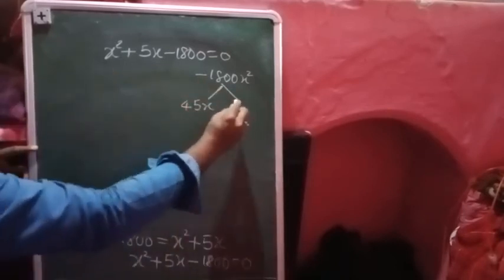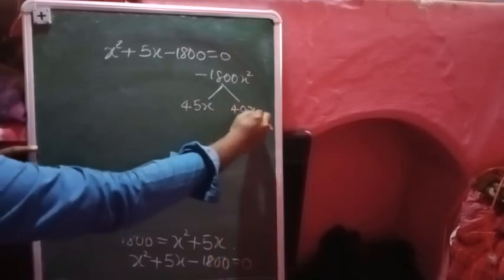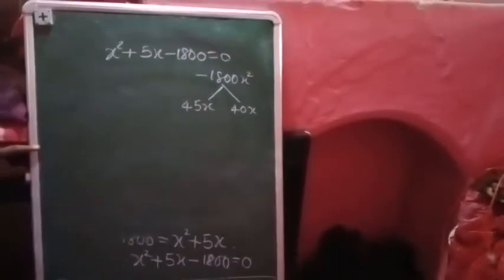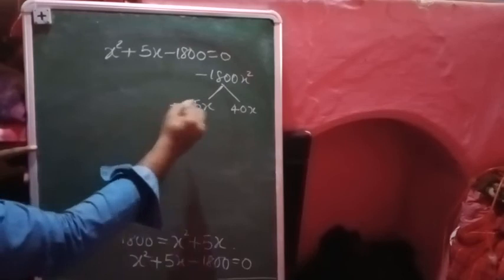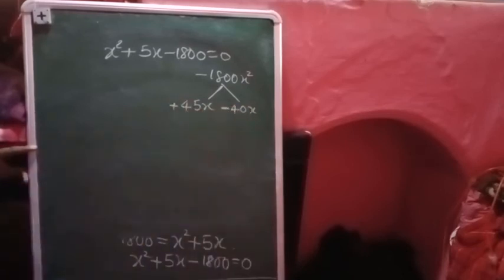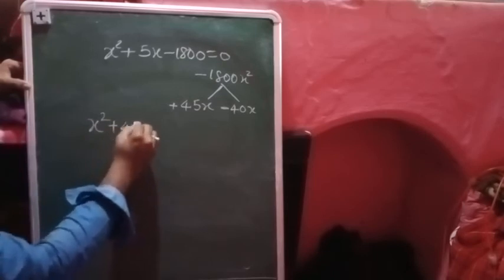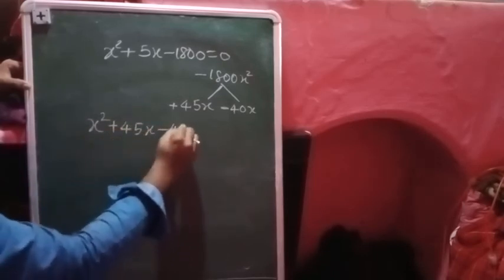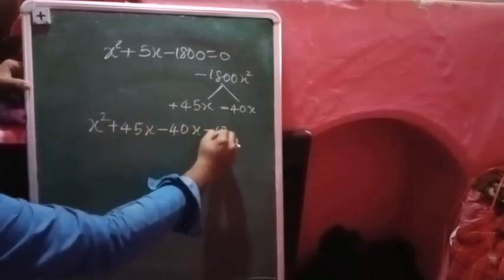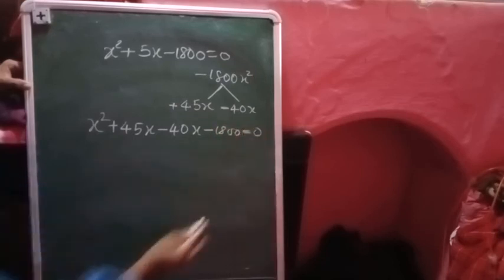I can take like this: you can get by factorization 45 into 40. So this 45 minus 40 gives us plus 5. Let us substitute in the given quadratic equation. It becomes x square plus 45 x minus 40 x minus eighteen hundred, which equals to zero.